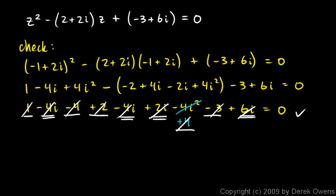Those are our two answers. 3 was one solution and negative 1 plus 2i was one solution. And both of those do in fact satisfy our original equation.